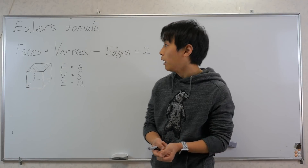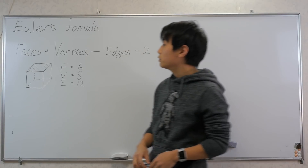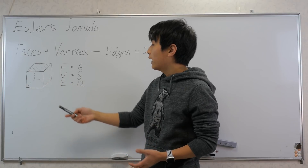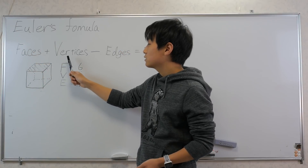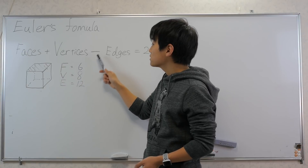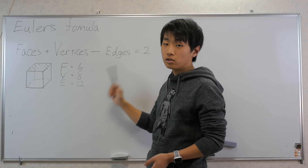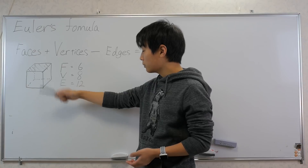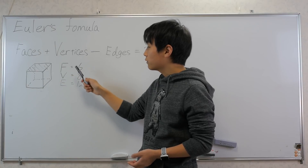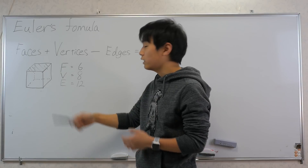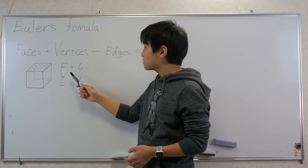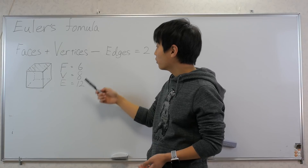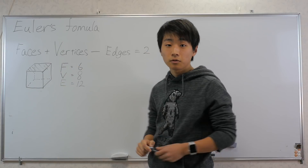The formula is fairly simple. For any polyhedron — I've drawn a cube here — if you add the number of faces and vertices, then minus the number of edges, you always get two. For a cube: faces is six (like a die), vertices is eight, and edges is twelve. So six plus eight is fourteen, minus twelve equals two.